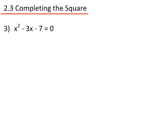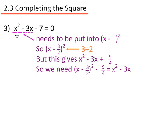Question 3: x squared minus 3x minus 7 equals 0. I need to get the x squared minus 3x into the squared format. We always use the x term — in this case minus 3 — and divide it by 2. We get x minus 3 over 2, all squared. Expanding gives x squared minus 3x plus 9 over 4, which is 3 over 2 squared. So I take it back off again: x minus 3 over 2 all squared minus 9 over 4 gives the x squared minus 3x I need.